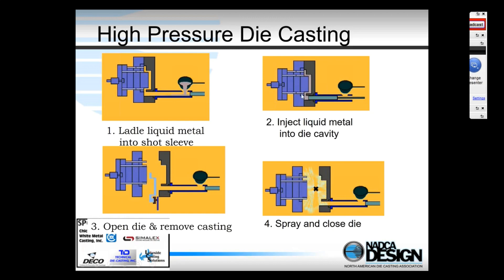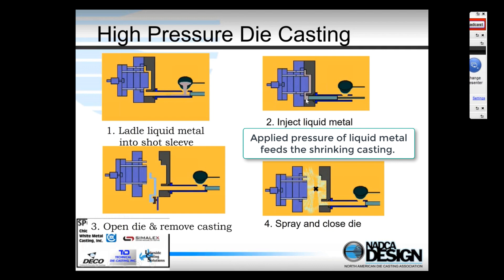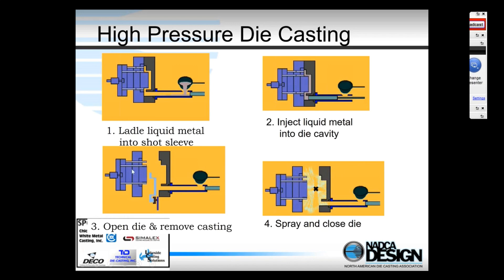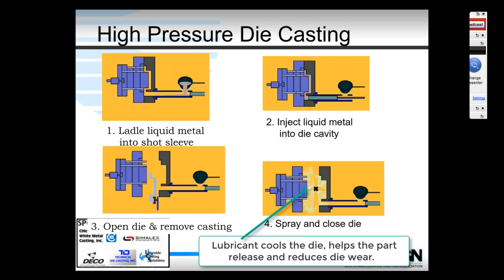As the metal is solidifying, we continue to press forward with the plunger to apply pressure, which reduces the amount of porosity in the castings. Once the casting is solidified, the die opens and the ejector side moves back. Steel ejector pins push the casting out of the cavity so a robot or pick-and-place device can grab it. Then we spray a water-based organic lubricant — a parting agent — on the die face to prevent liquid metal from sticking, clamp the die closed, and repeat the process.